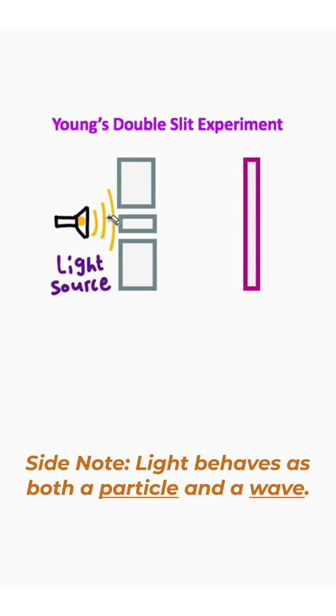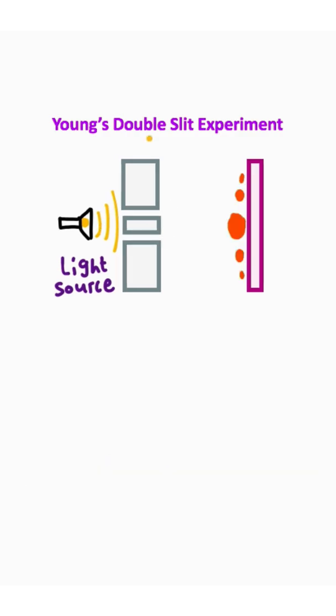This was done by taking a light source and shining it through two small slits. A pattern appeared on the screen, and this pattern showed that waves were constructively interfering with each other, and the waves had destructive interference at the points where we saw no light.